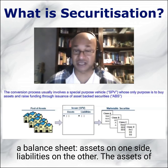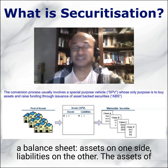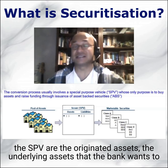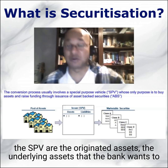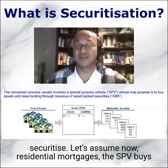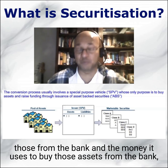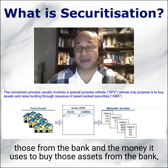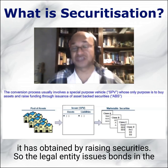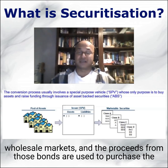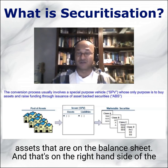The Special Purpose Vehicle, like any corporate entity, has a balance sheet — assets on one side, liabilities on the other. The assets of the SPV are the originated underlying assets that the bank wants to securitize — let's assume residential mortgages. The SPV buys those from the bank, and the money it uses to buy those assets is obtained by issuing bonds in the wholesale markets. The proceeds from those bonds are used to purchase the assets, shown on the right-hand side of the diagram.